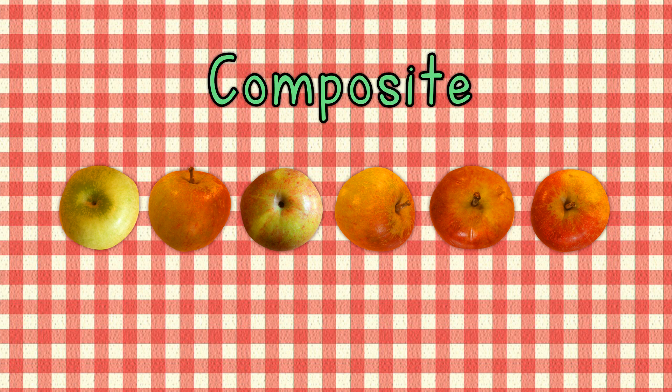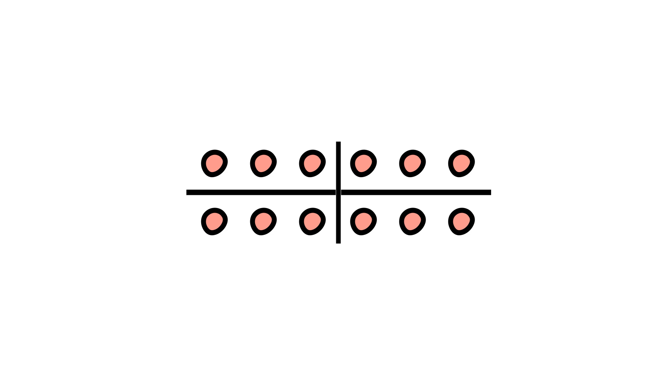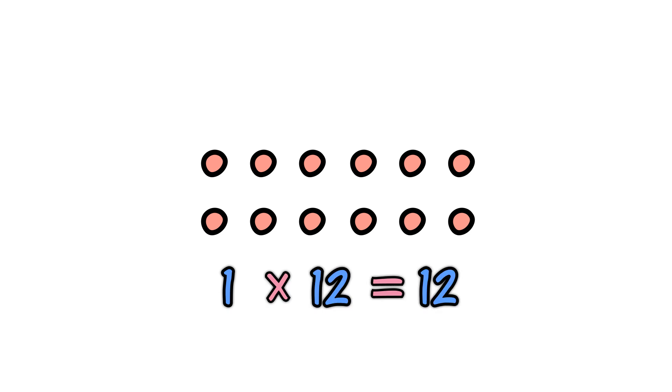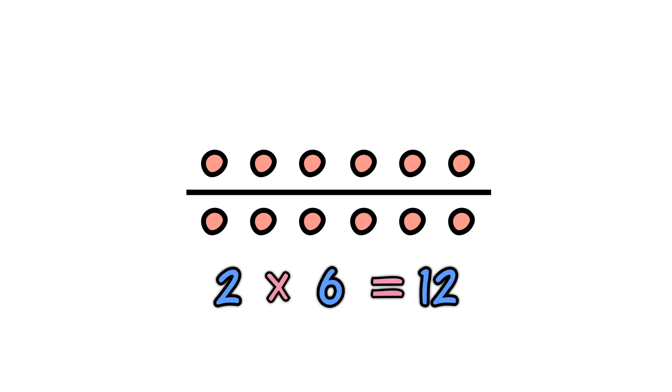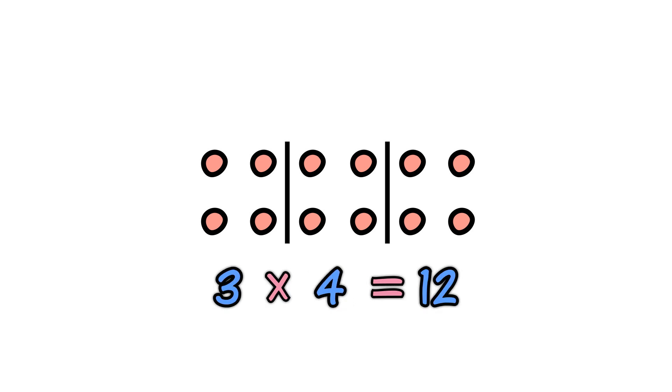Sometimes a number can be divided evenly many ways. Example: 12 can be divided evenly by 1, 2, 3, 4, 6, and 12. 1 times 12 equals 12. 2 times 6 equals 12. 3 times 4 equals 12. So 12 is a composite number.